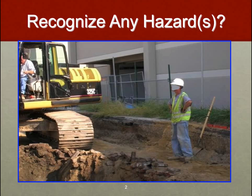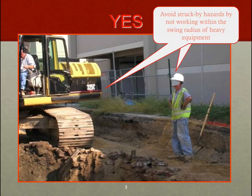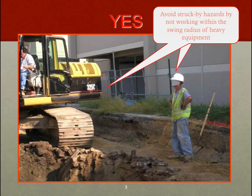We have a backhoe operator and a nearby worker in close proximity to that backhoe. What do you think the hazard is here? OSHA's commentary points to swing radius — and that would be correct. Employees should avoid struck by hazards by not working within the swing radius of heavy equipment. A lot of companies will provide a barricade, whether soft or hard, to prevent workers from entering that swing radius of a backhoe, crane, or anything else that could rotate without real warning.